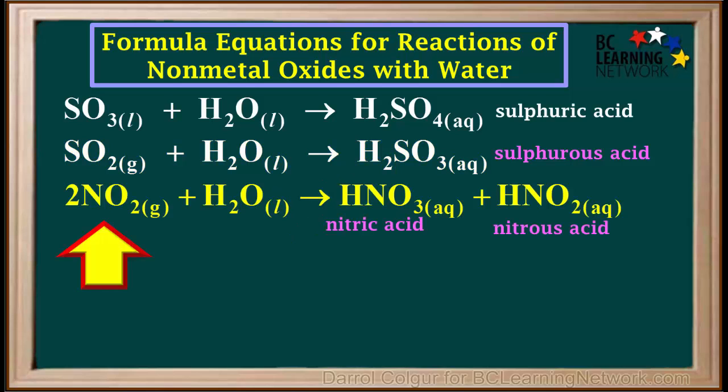A common oxide of nitrogen is nitrogen dioxide, NO2. This reacts with water to produce both nitric acid, HNO3, which is a strong acid, and nitrous acid, HNO2, which is a weak acid.